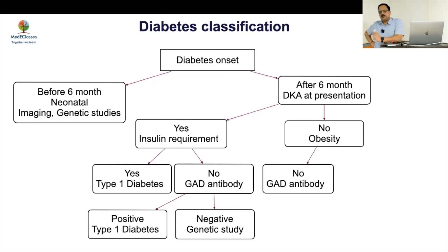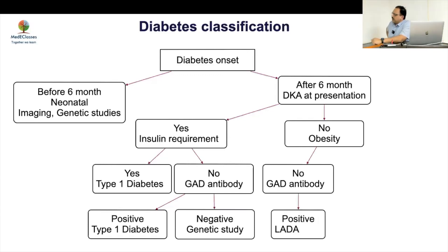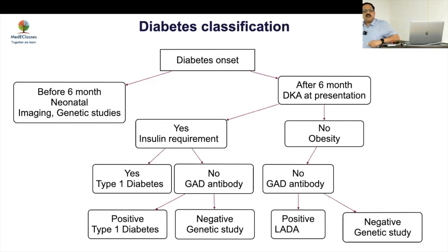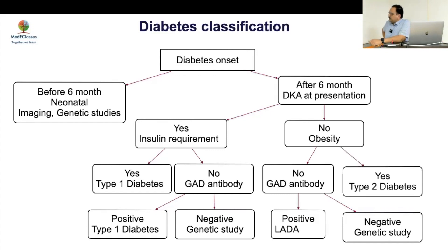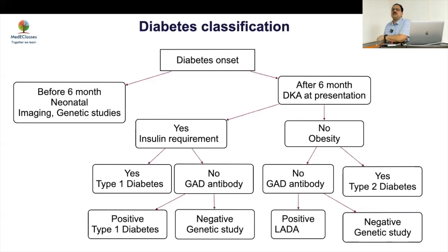If there is no DKA and no obesity, this is a confusing picture — it can be MODY or LADA because it may evolve over time. Do a GAD antibody: if positive, this is LADA; if negative, go for genetic study. If there is obesity and no ketosis and the child is stable, this is most likely type 2 diabetes. Don't do investigations in everybody — just classify like that.